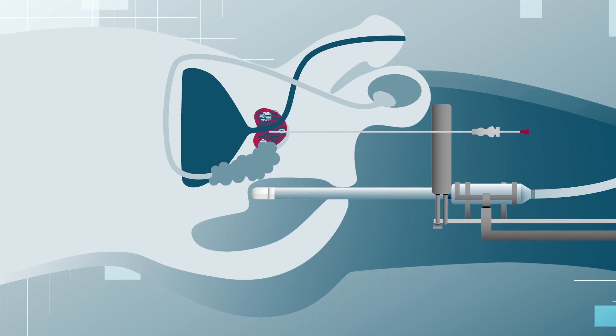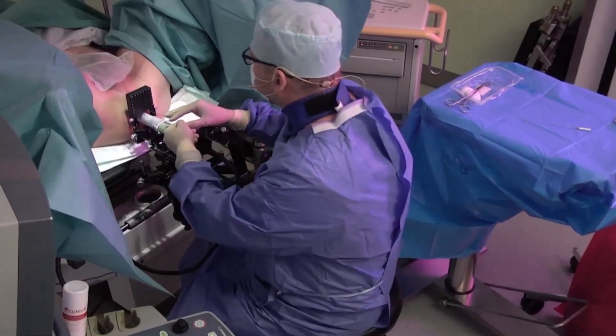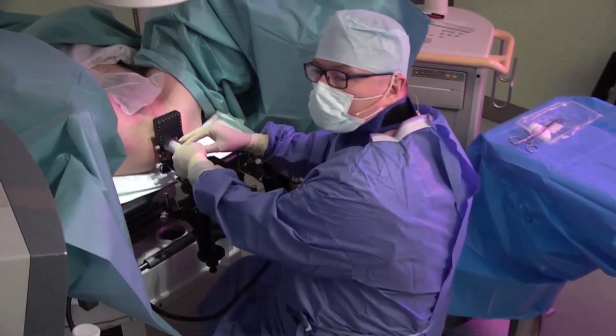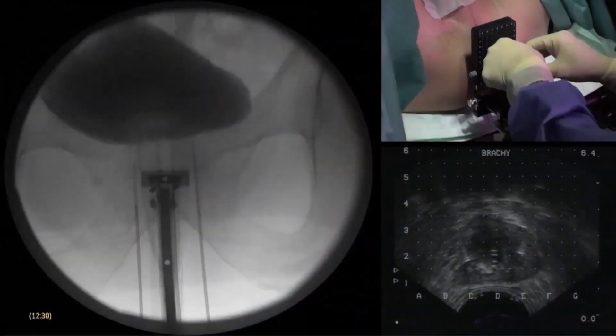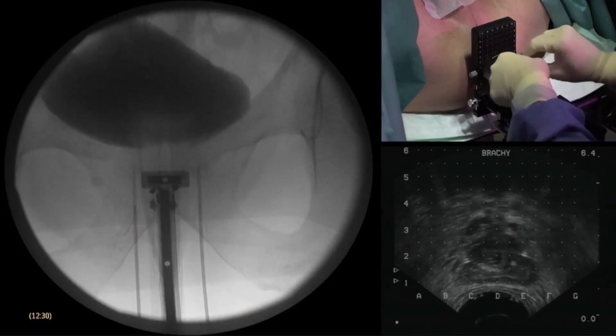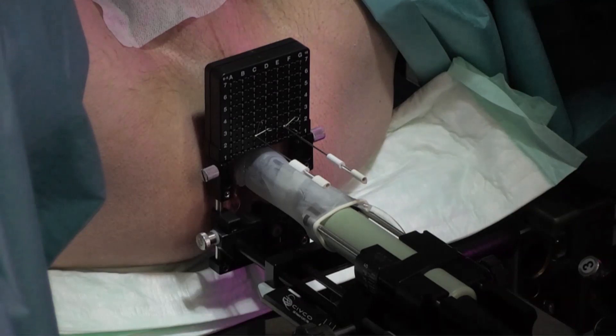In the following, we will take a closer look at the seed implantation procedure. After general anaesthesia and the rectal insertion of an ultrasound probe, two fixation needles are placed to stabilise the prostate in the desired position for the treatment. The prostate and the surrounding tissue are then recorded in layers using the probe.